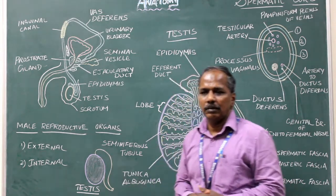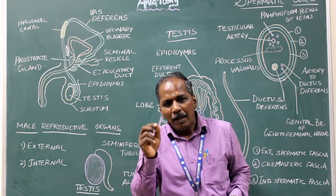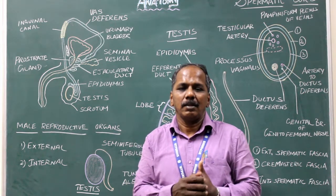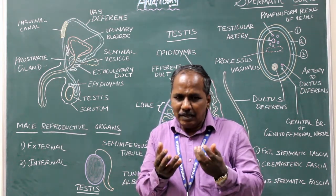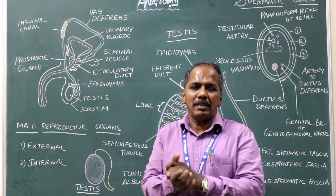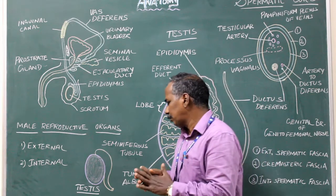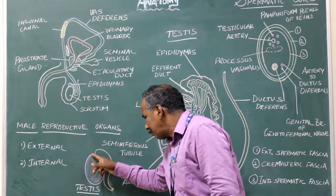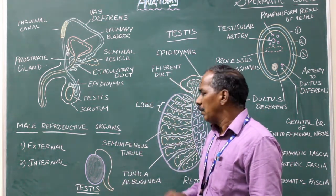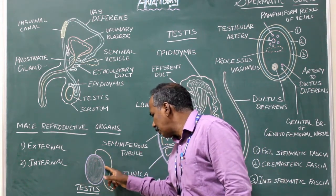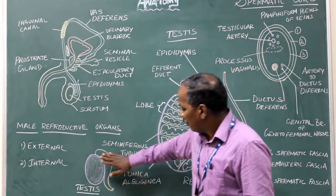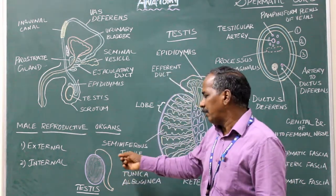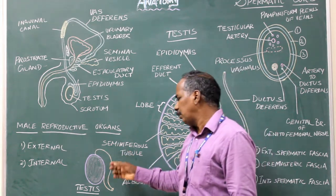Testes. What is testes? It is a pair of male gonads suspended in the scrotum. The left testis is somewhat lower than the level of the right testis. Parts: it has two ends or poles — upper pole and lower pole; two borders — anterior border and posterior border; two surfaces — medial surface and lateral surface. So these are the external features of the testes.